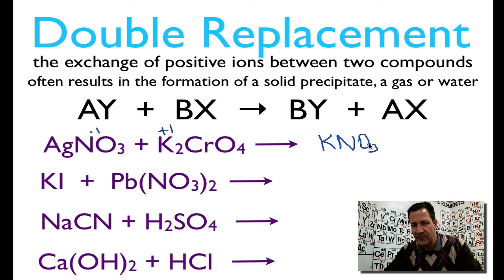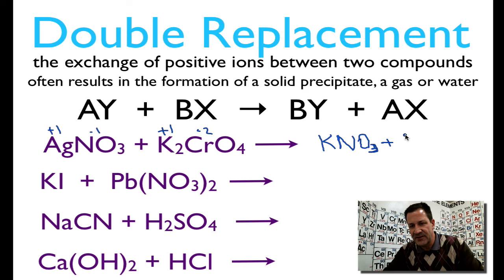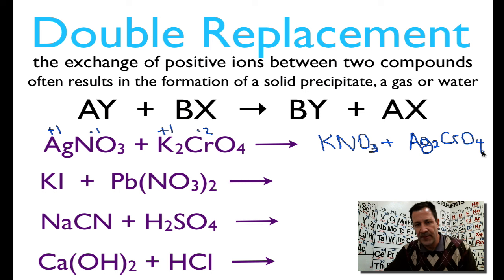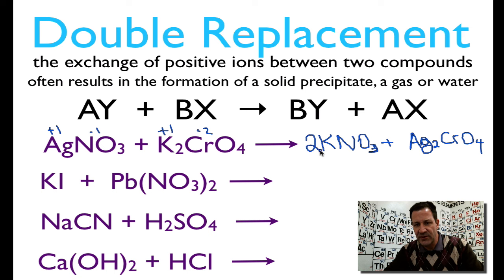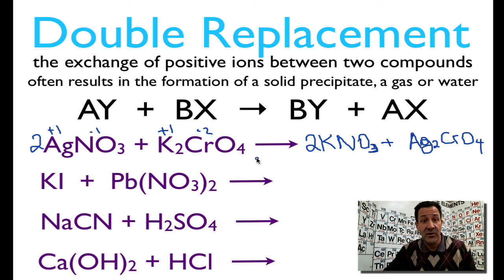The other product is silver chromate. Silver forms a plus-one charge and chromate forms a minus-two charge, so this is going to be Ag₂CrO₄. So silver nitrate plus potassium chromate will form potassium nitrate and silver chromate. Let's balance that: we have two potassiums on the left, so we need two potassiums on the right, which means two nitrates. We put a two in front of the silver, and we have two silvers and two silvers, one chromate and one chromate. That is the double replacement reaction for silver nitrate and potassium chromate.